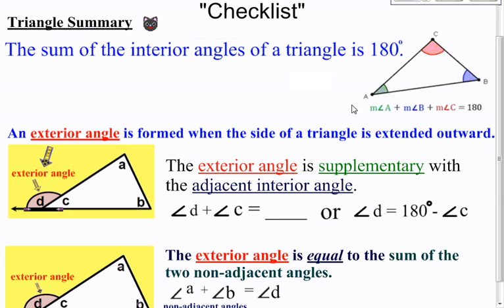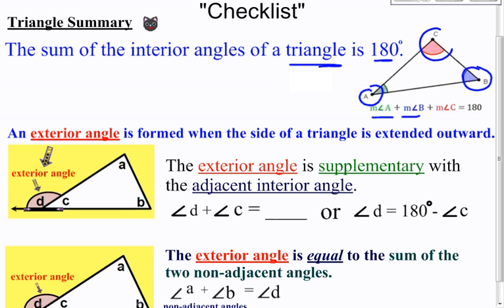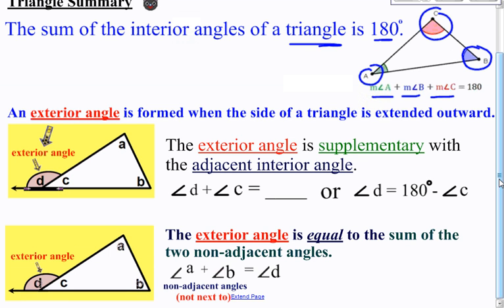This video is going to help you solve for the missing angles of a triangle — sometimes an exterior angle, sometimes interior angles. The first thing you need to know is that the sum of the interior angles of a triangle is 180 degrees. So if you add the measure of angle A plus the measure of angle B plus the measure of angle C, that must equal 180 degrees.